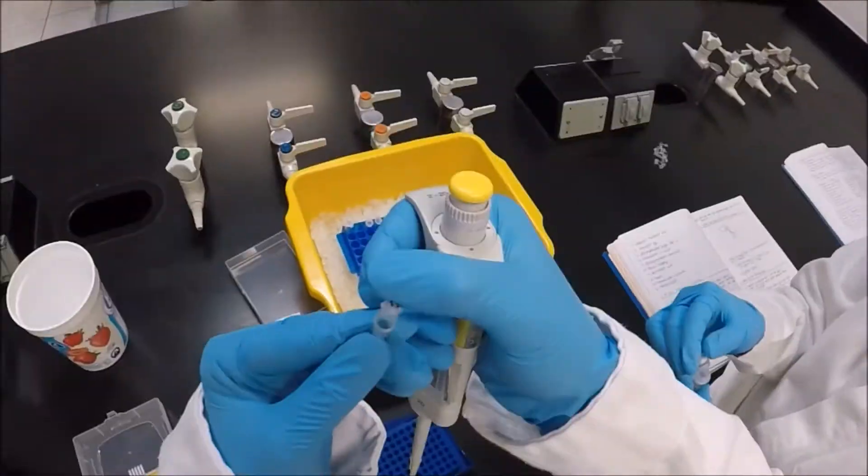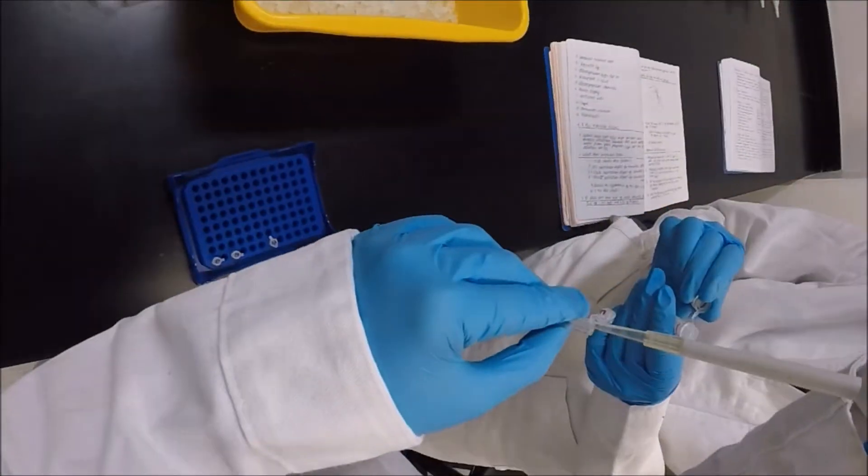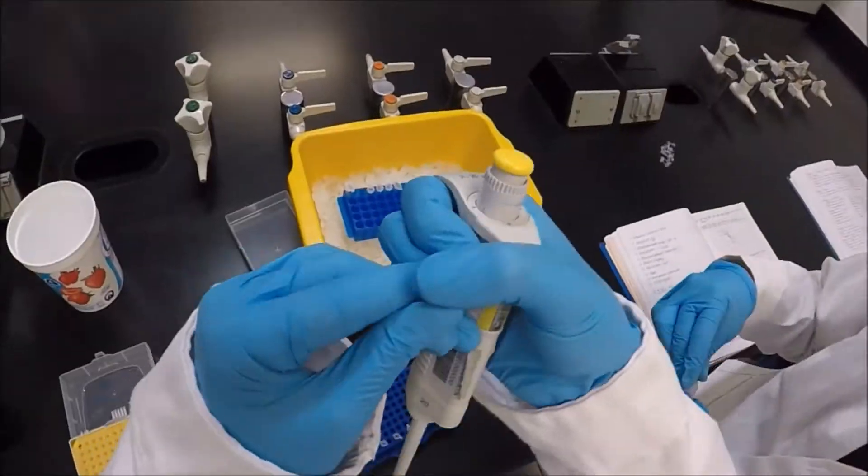Then, 4 microliters of the pTZ19R were added to the P, E, H, and L microtubes. Meanwhile, for the lambda tube, 4 microliters of lambda DNA were added to it.